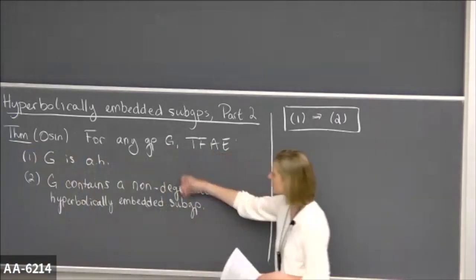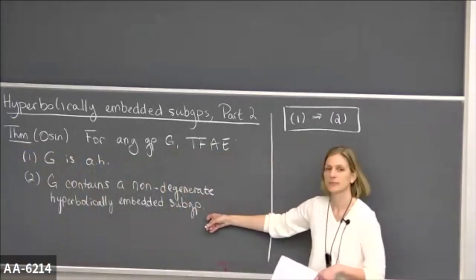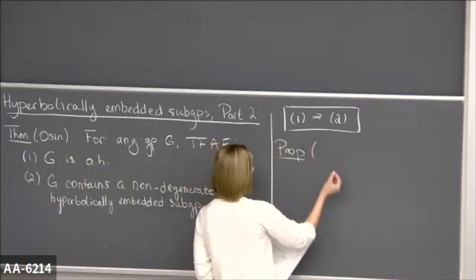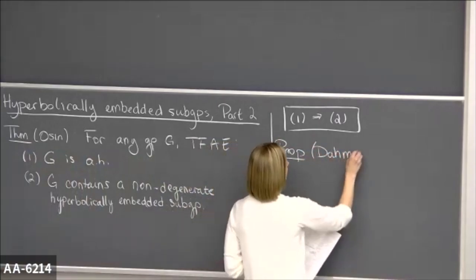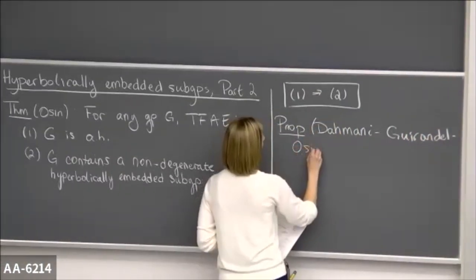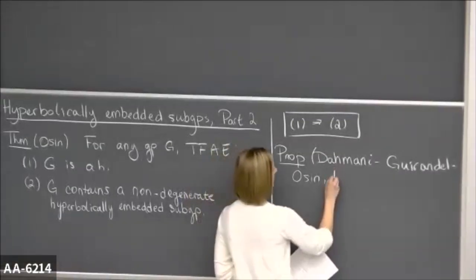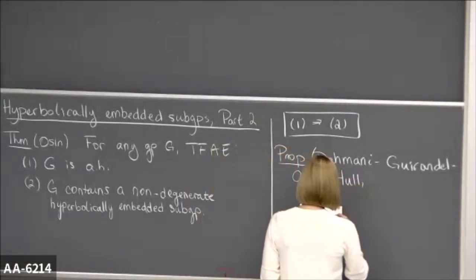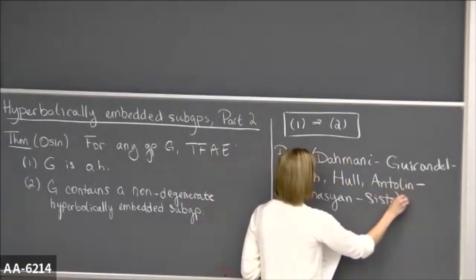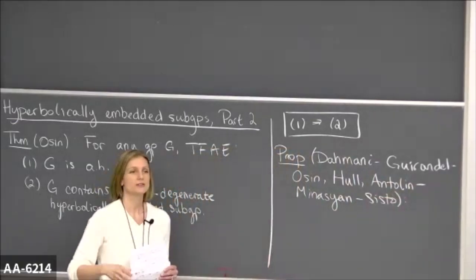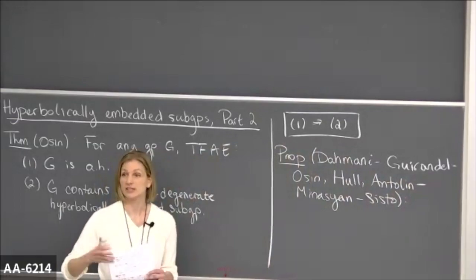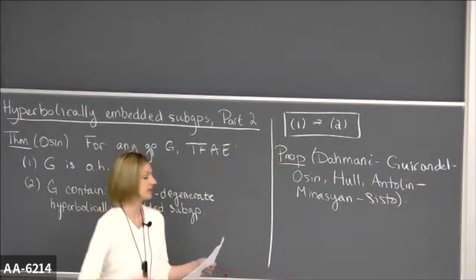If you start with an acylindrically hyperbolic group, the way you get a hyperbolically embedded subgroup relies on a proposition. The original proposition is due to Damani, Girardel, and Osin. Then there are some refinements and other versions of this — one given by Hull, and one given by Antolin, Manassian, and Systo.